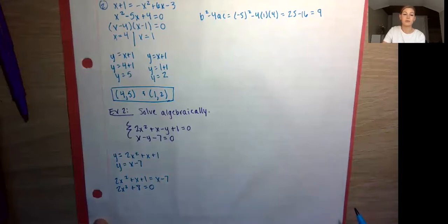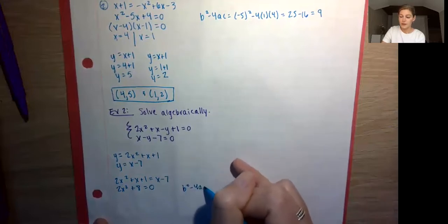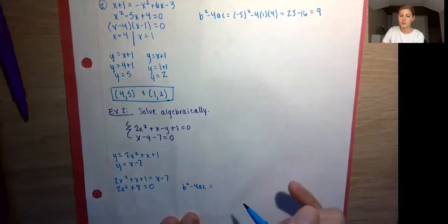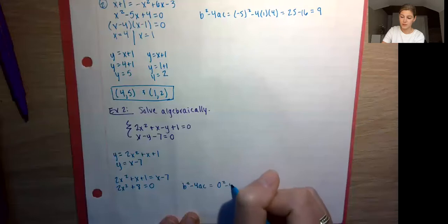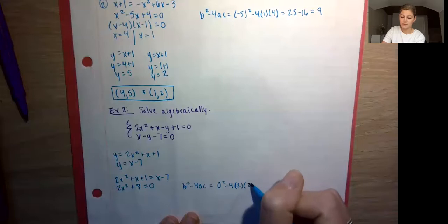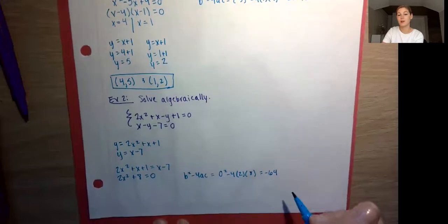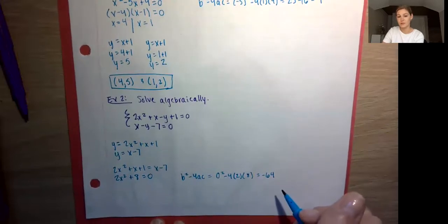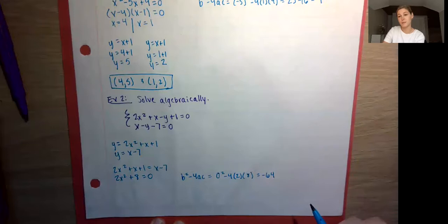Now we want to solve for x, so let's check the discriminant: b² − 4ac. Do we have a b term? No, so that's just 0. So 0² − 4(2)(8) = −64. Since we have a negative discriminant, we can't use add-multiply or reverse box — we're going to get imaginary solutions, so we have to use the quadratic formula.